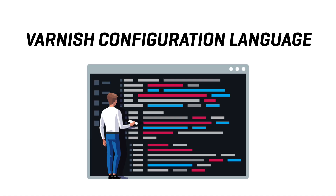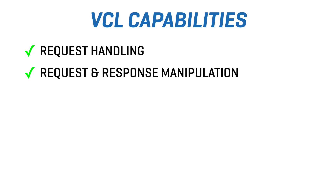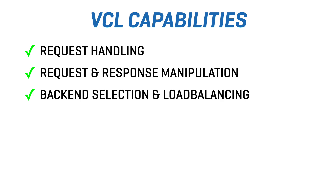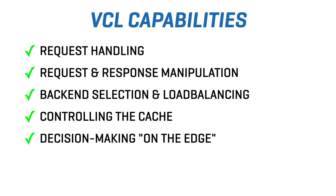The unique selling point of Varnish is VCL — the Varnish Configuration Language. It's a built-in programming language that can be used to customize the behavior of the cache beyond what is possible through HTTP's built-in caching mechanisms. VCL can be used for request handling, request and response manipulation, back-end selection and load balancing, and controlling every element of the cache: what to cache, when to cache, how to cache, how long to cache, and many more. It's pretty much a language that allows you to make decisions on the edge, and it qualifies as an edge compute programming language.